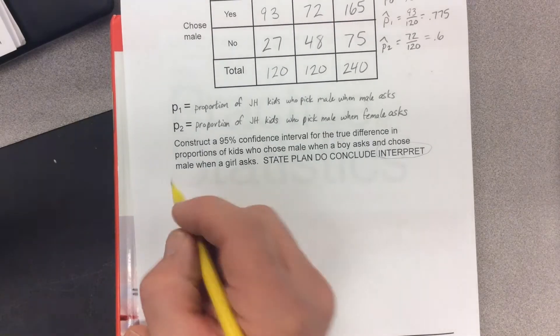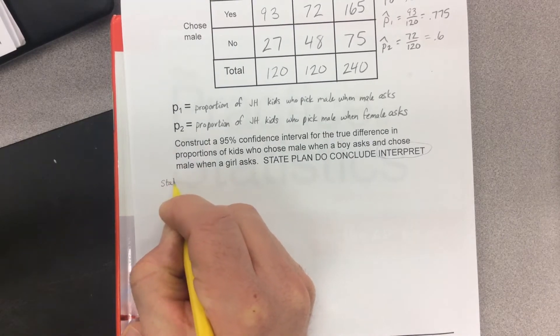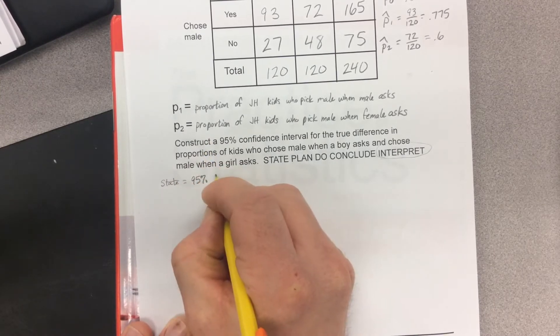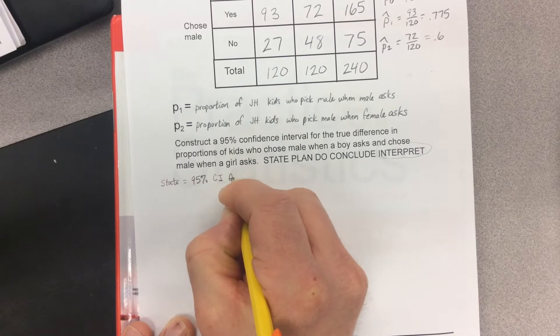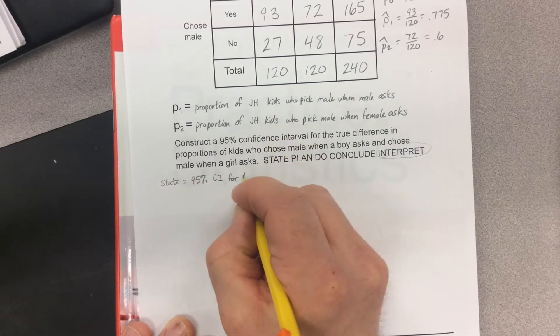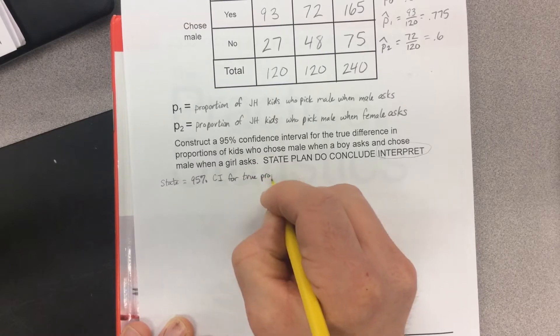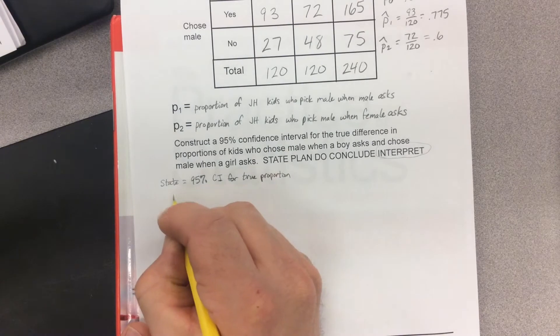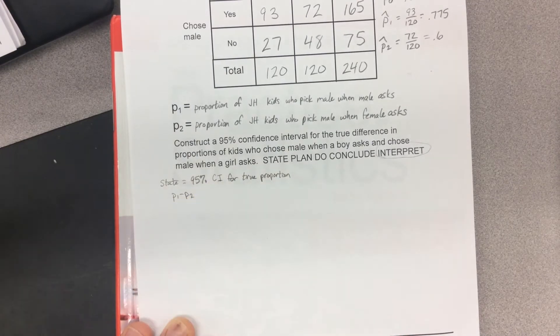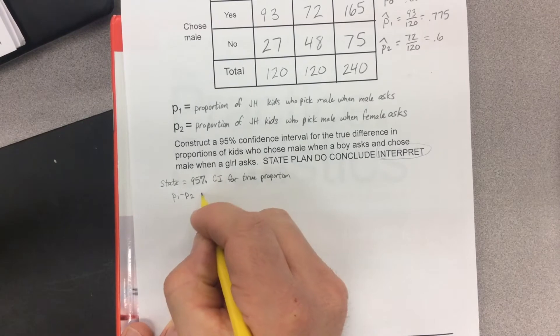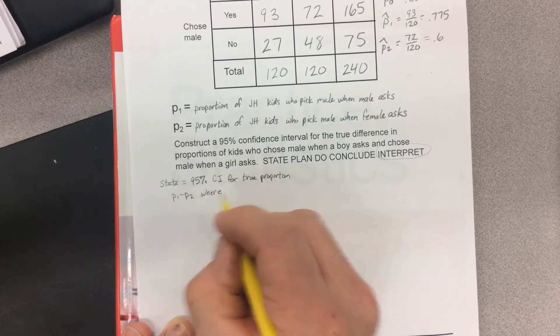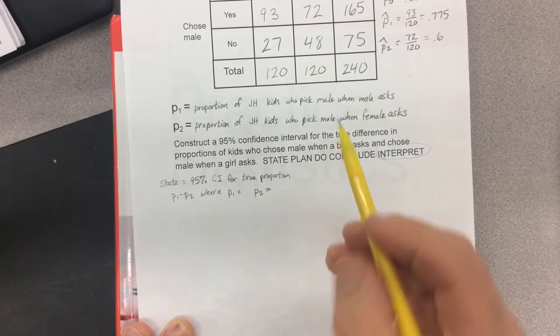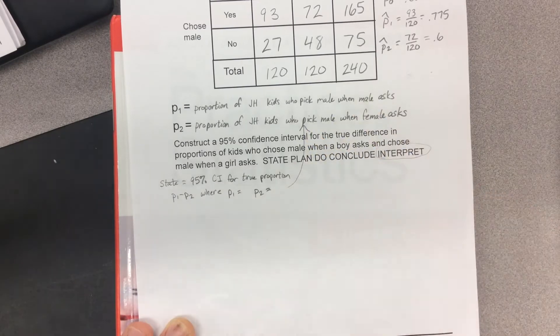First, let's state. I want a 95% confidence interval for the true proportion of P1 minus P2, where P1 and P2 are defined above. I don't really feel like copying them down again, so I'm just going to draw an arrow.